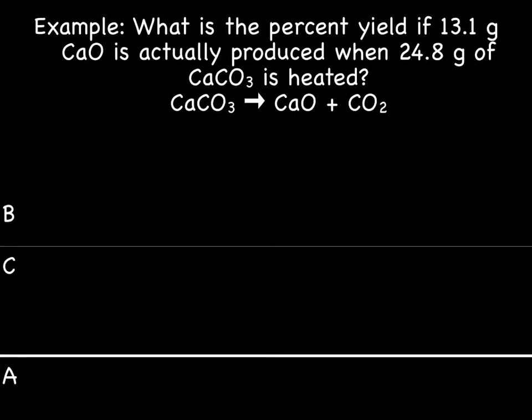So percent yield is what you really made divided by what you hoped you would make, mathematically speaking, multiplied by 100. Okay, well let's try it. The example is: what is the percent yield if 13.1 grams of CaO is actually produced when 24.8 grams of CaCO3 is heated? We're going to be using the BCA table. And before we move on, let's read when people can get confused when there's multiple numbers. We have the 13.1 grams and the 24.8 grams. Well, the 13.1 grams goes with CaO, which is a product. So this 13.1 grams is the actual yield.